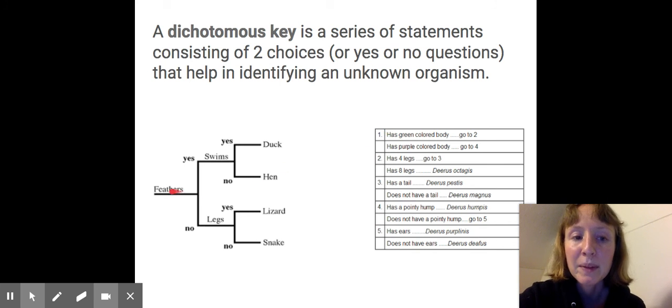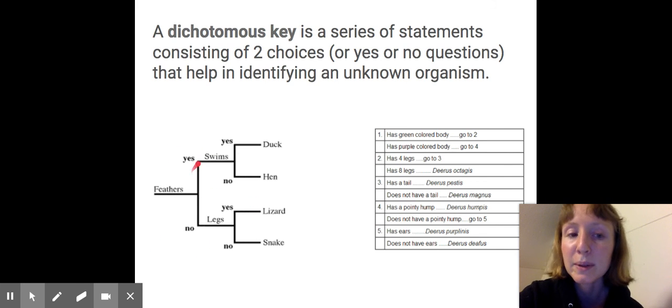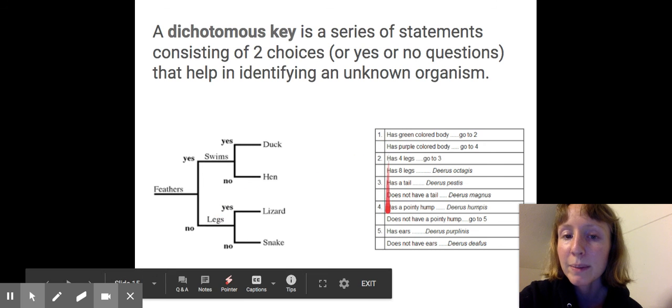So for example, if you're looking at a bird and it has feathers, you say, yep. Or you're looking at an organism and it has feathers, then yes, that means it's a bird. And if it swims, maybe it's a duck. This is obviously very simplified. But you can see how it can be drawn in a branch, or it can be drawn like this.